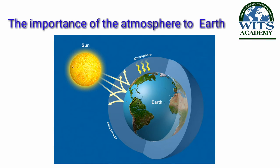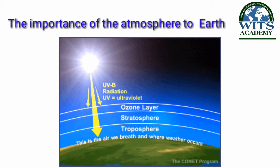Ab is atmosphere ki importance kya hai? Atmosphere suraj ki khatarnak shuaon ko zameen tak aane se rokta hai aur suraj se excessive heat ko trap karta hai, taaki zameen ka temperature tamam jandaron ke liye mufeed rahe. Atmosphere mein maujood ozone layer suraj ki khatarnak shuaon — ultraviolet radiation — ko zameen tak pahunchne se pehle filter karti hai, jiske baghair jandaron ka zameen par survive karna bahut mushkil hai.